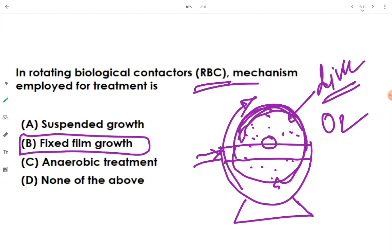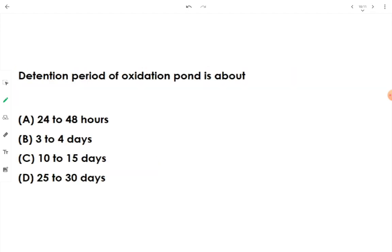The detention period for oxidation pond is about 10 to 15 days. We detain the wastewater for 10 to 15 days in an oxidation pond.